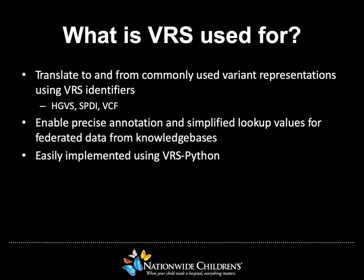So you may be wondering, why is VRS important? Why should you care about it? What's it used for? Well, with VRS, you can translate to and from commonly used variant representations using VRS identifiers. The currently supported variant representations are HGVS, SPDI, and VCF. Using VRS identifiers also allows precise annotation and simplified lookup values for federated data from knowledge bases. You can take advantage of these features by implementing our open-source Python package, called VRS Python, in your applications.